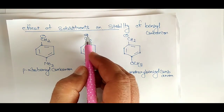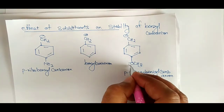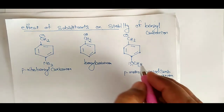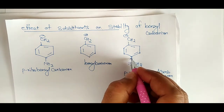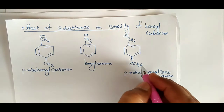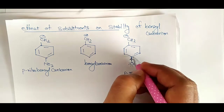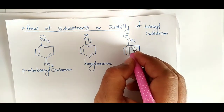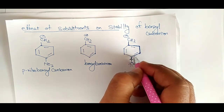So therefore simple benzyl carbene is unstable. In the case of paramethoxybenzyl carbene, the methoxy group is electron-donating. If it donates electron density, that will go to the carbene carbon atom and therefore there will be an increase in the electron density.